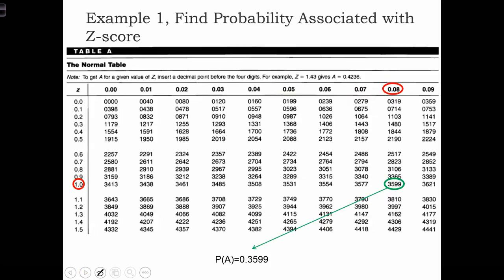Let's get our table out. Here's just a copy of the same table you have in the back of your book. We're going to go down the left-hand side to 1.0. Remember, our target is 1.08. So we go down to 1.0 and across to 1.08, and we find the area is 0.3599.